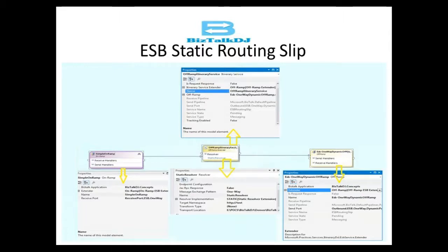Hello everyone, welcome to today's session. Today we will build a simple itinerary service with a static resolver, where we would be receiving a message and based on the message we would have an off ramp extender which would be setting the routing information with a static resolver and would route it to an off ramp dynamic send port.